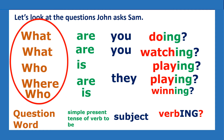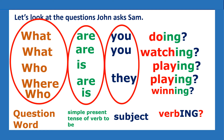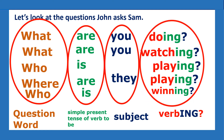Number one: question word. Number two: simple present tense of the verb 'to be.' Number three: subject. Number four: the present participle, which is the verb plus -ing. And of course, because it's a question, don't forget the question mark.